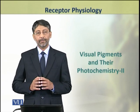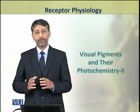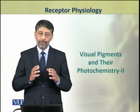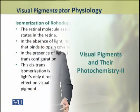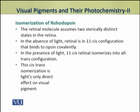In this topic we shall continue to discuss the visual pigments and their photochemistry. The rhodopsin isomerization that involves the retinal molecule will be discussed here. The retinal molecule assumes two sterically distinct states in the retina.